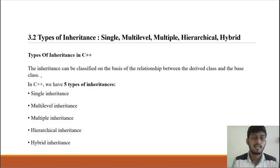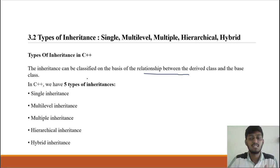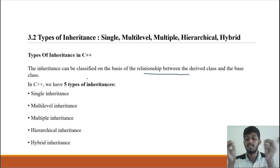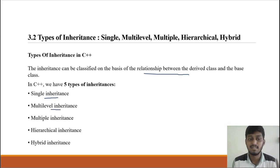The inheritance can be classified on the basis of the relationship between the derived class and the base class. On the basis of this relationship we have 5 types of inheritance: single inheritance, multi-level inheritance, multiple inheritance, hierarchical inheritance and hybrid inheritance.